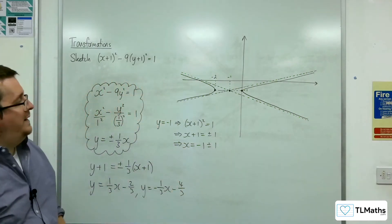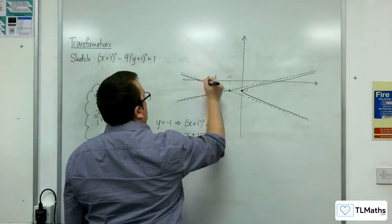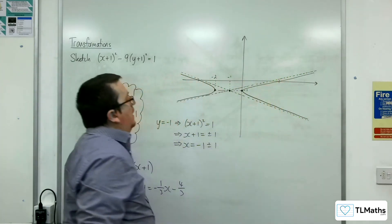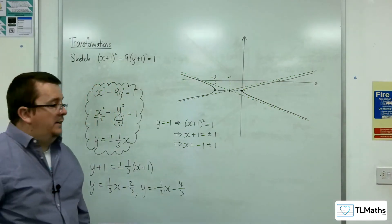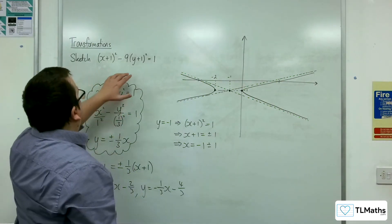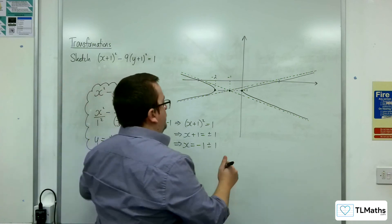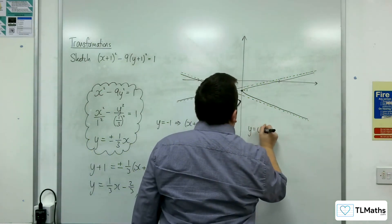And you can see that the curve intersects the x-axis at two points. And so I could work out where they are by putting y = 0 into the original equation. So when y is equal to 0,